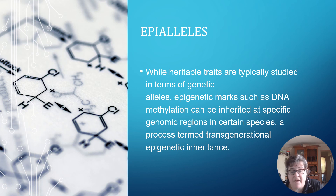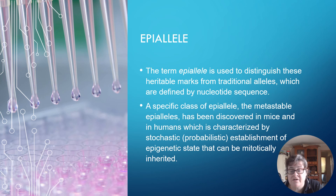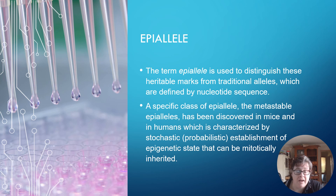Epi-alleles: while heritable traits are generally studied in terms of genetic alleles, epigenetic marks such as DNA methylation can be inherited at specific genomic regions in certain species — a process called transgenerational epigenetic inheritance. The term 'epi-alleles' is used to distinguish these heritable marks from traditional alleles, which are defined by nucleotide sequences. A specific class of epi-alleles, called metastable epi-alleles, has been discovered in mice and in humans, characterized by the stochastic, probabilistic establishment of an epigenetic state that can be mitotically inherited.